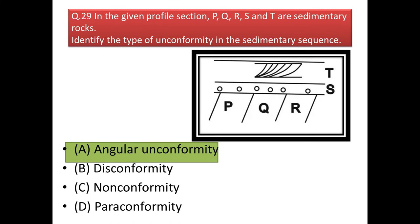Next question: in the given profile section, P, Q, R, S, and T are sedimentary rocks. Identify the type of unconformity in the sedimentary sequence. P, Q, R are parallel to each other but after that, S and T change orientation. This conformity is an angular unconformity, where the lower beds are parallel to each other but the beds at the top make some angle with the underlying rocks.